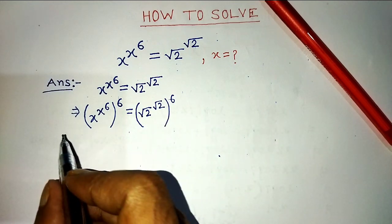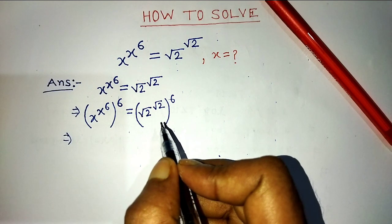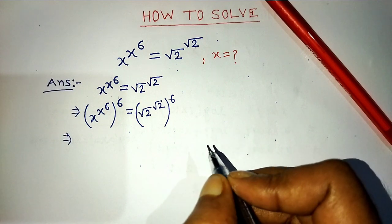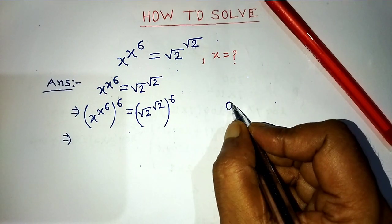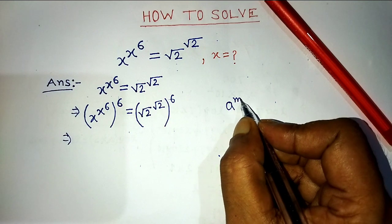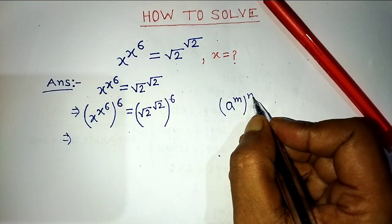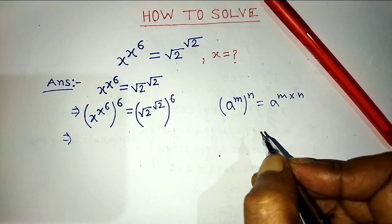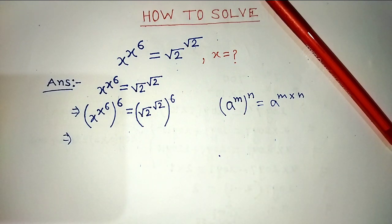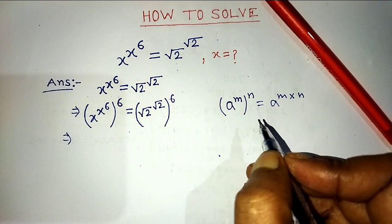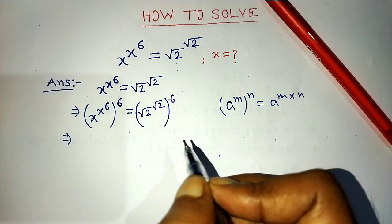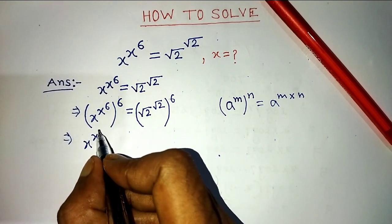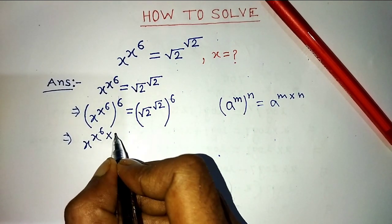After taking power 6 on both sides, we get this type of terms. We have to apply the formula: a to the power m, whole to the power n, equals a to the power m into n. We apply this formula on both sides. On the left hand side, we write x raised to the power x to the power 6 into 6.